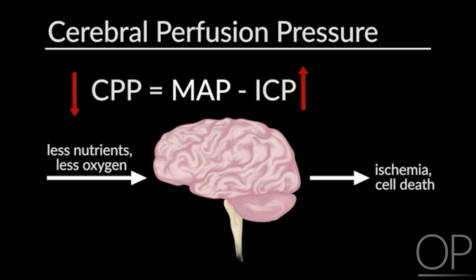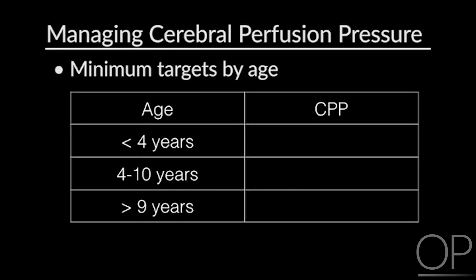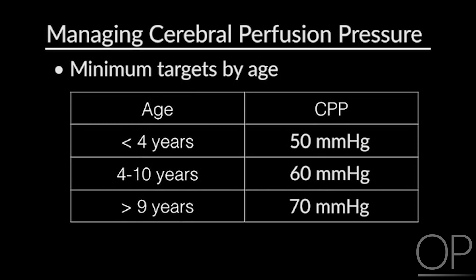When managing cerebral perfusion pressure, we think about minimum targets by age. Less than four years of age, we target a cerebral perfusion pressure around 50 millimeters of mercury. Between four to about 10 years of age, we target around 60 millimeters of mercury as a minimum. Greater than nine years, we start to think of them more like an adult and target a cerebral perfusion pressure around 70 millimeters of mercury.